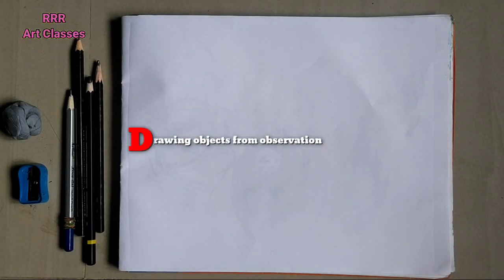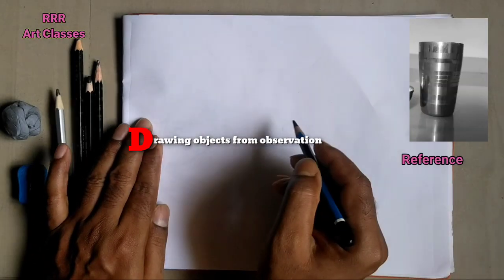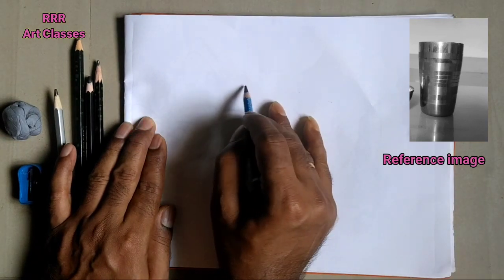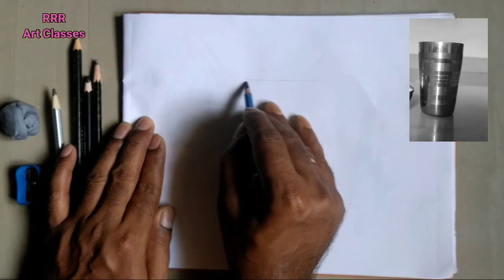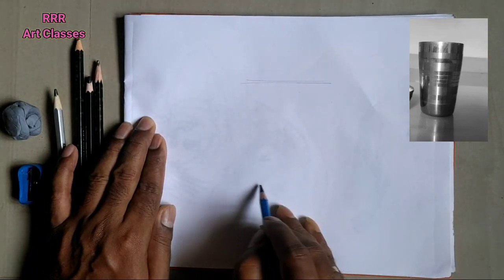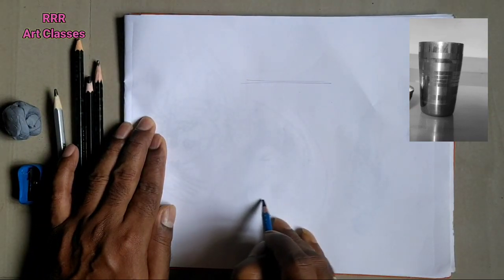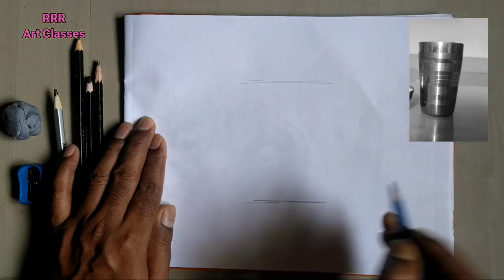Hello viewers, this lesson is about drawing objects from observation or life. Here I have taken a reference of a glass and we are going to draw that glass on the paper.